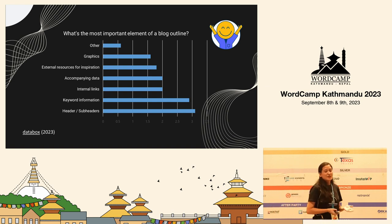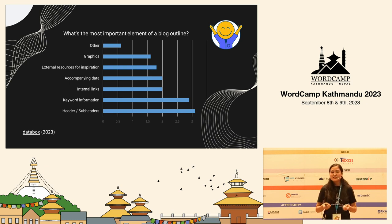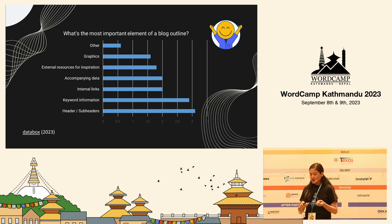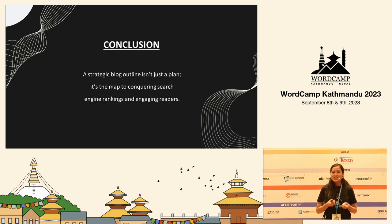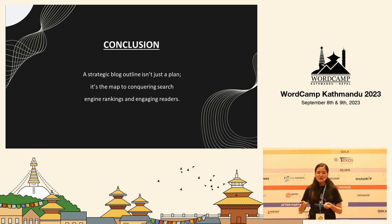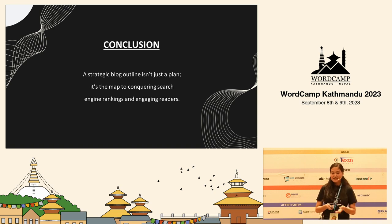In this statistic, you can clearly see that headings and subheadings is the most important element for a blog outline. With that, I'd like to conclude my presentation by saying that a strategic blog outline isn't just a plan, but it's a map to conquering search engine rankings and engaging readers. Thank you.